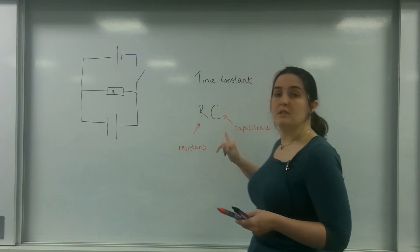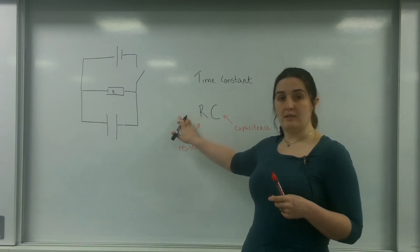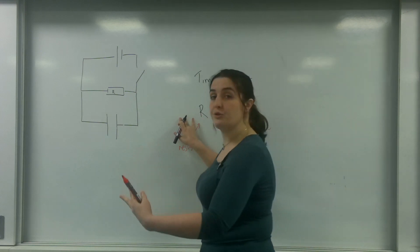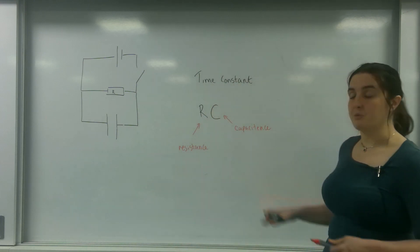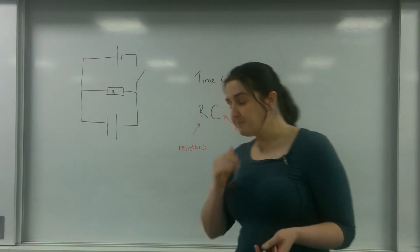So the time constant is R times C. The resistor affects the circuit because it affects how much current flows through. And the capacitance affects the circuit because it depends on how much charge is being held.